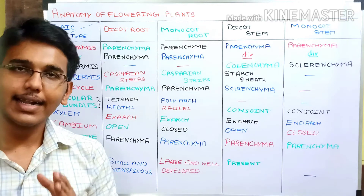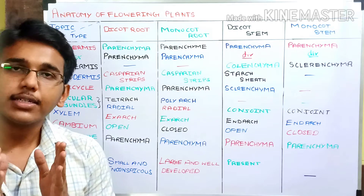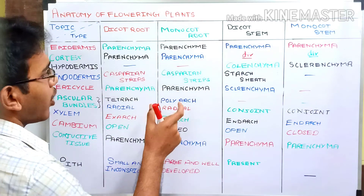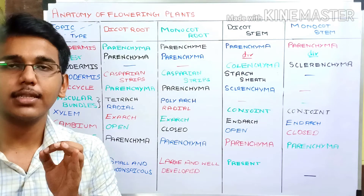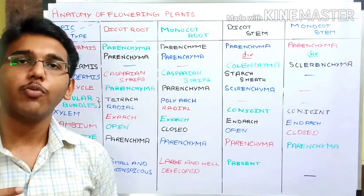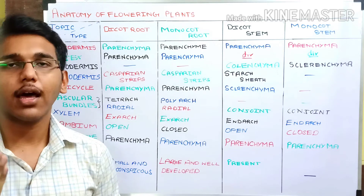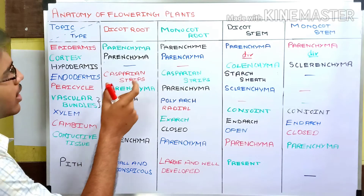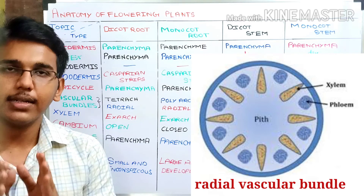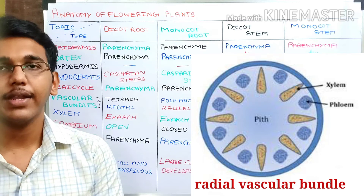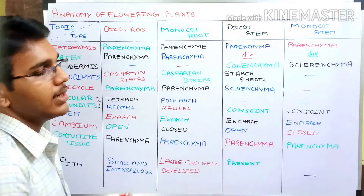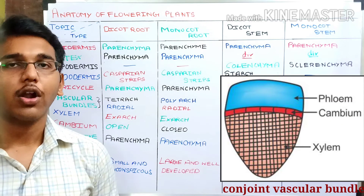The vascular bundles are important for transport of food, water, and minerals, and constitute phloem and xylem. The vascular bundle of dicot root is tetrarch — four xylem bundles — and monocot root is polyarch — more than five xylem bundles. Both roots have radial vascular bundles, where xylem and phloem are arranged alternately at different radii. In stems, it is a conjoint vascular bundle type, where xylem and phloem are of almost the same radii.